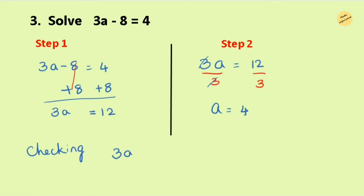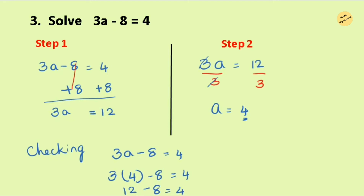Let's verify whether the value of a equals 4 is correct. Write the equation as it is and substitute a equals 4: 3 times 4 minus 8 equals 4. Following the order of operations, multiply first — 3 times 4 equals 12 — then 12 minus 8 equals 4. The right-hand side is also 4, so both numbers are equal and the answer is correct. The value of a equals 4 is true.